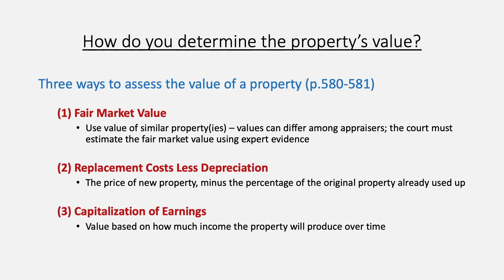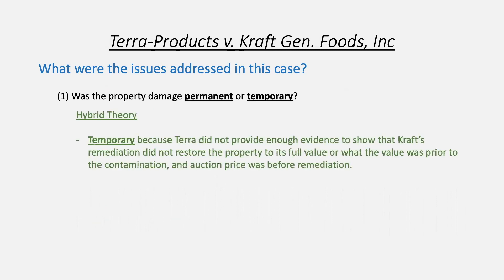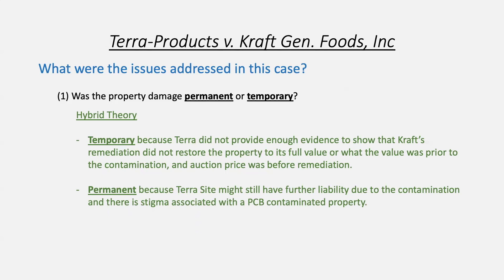Returning to the Terra case, the court applied a hybrid theory. On step one — permanent or temporary — the court said it's temporary because Terra didn't provide enough evidence to show that Kraft's restoration didn't restore the property to full value, or what the value was before contamination. Their auction price was even before remediation, so we don't know what it would be after Kraft repaired it. But it's also somewhat permanent because Terra site might still face further liability from years of contamination, and there's a stigma associated with PCB contamination that Terra might never get rid of.